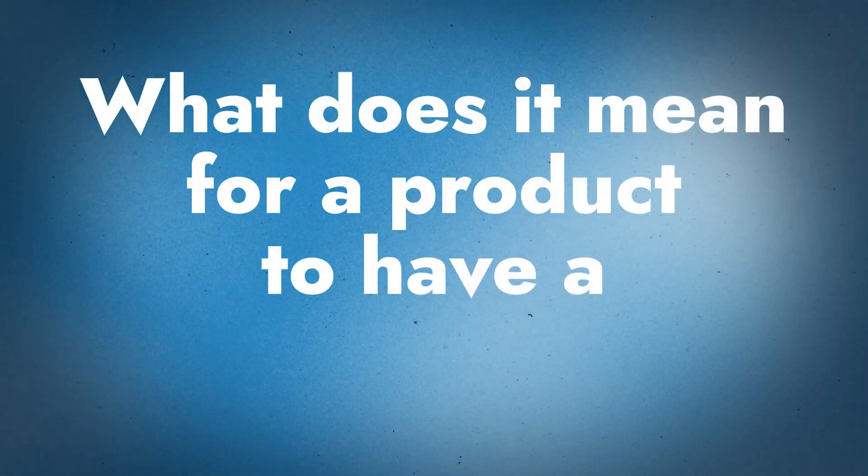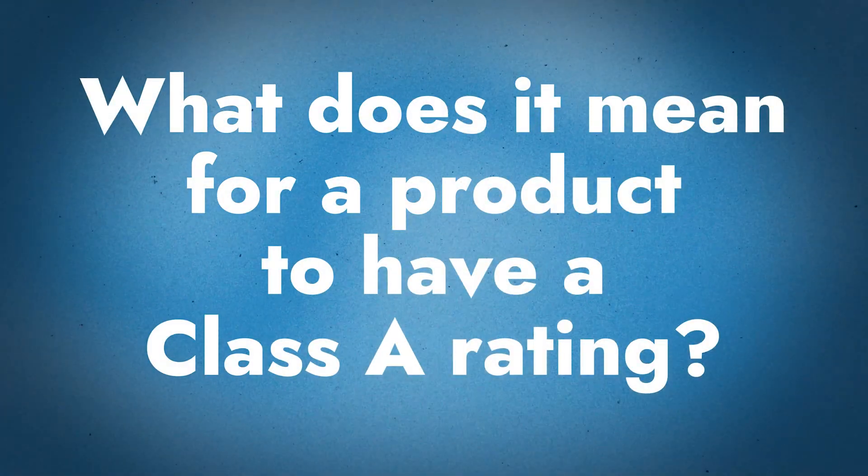So what does a Class A fire rating mean when it comes to products? Class A is a determination based off a test standard. Class A is the highest fire rating you can achieve — there's also a Class B and a Class C, and those aren't as good. The test standard we use is UL 790, that's how we achieve our Class A rating and that's the test standard we perform.